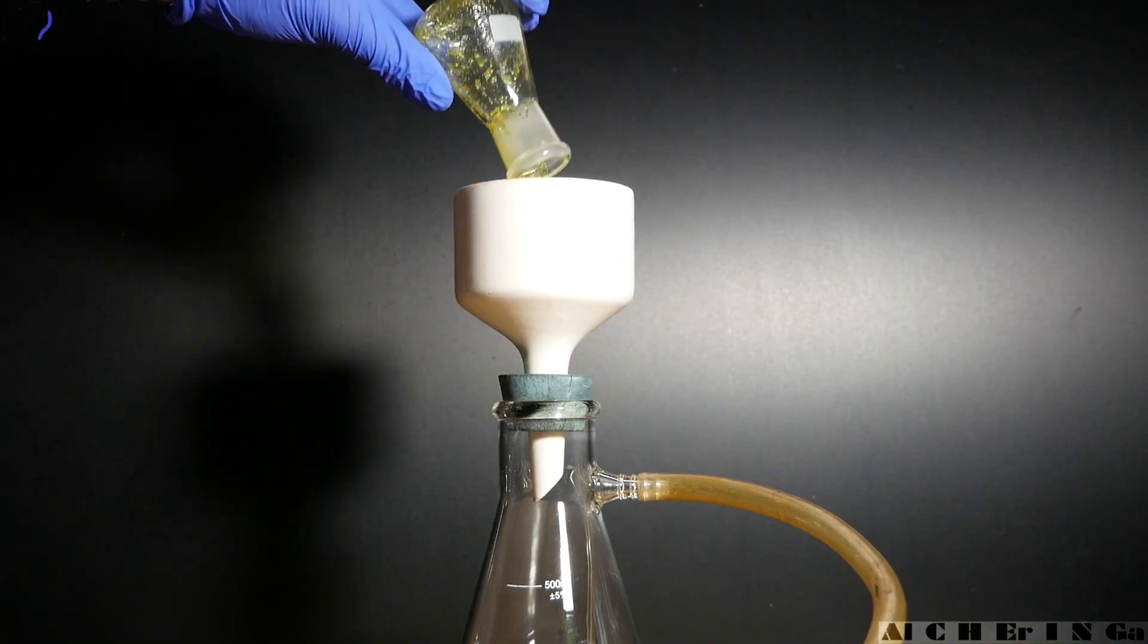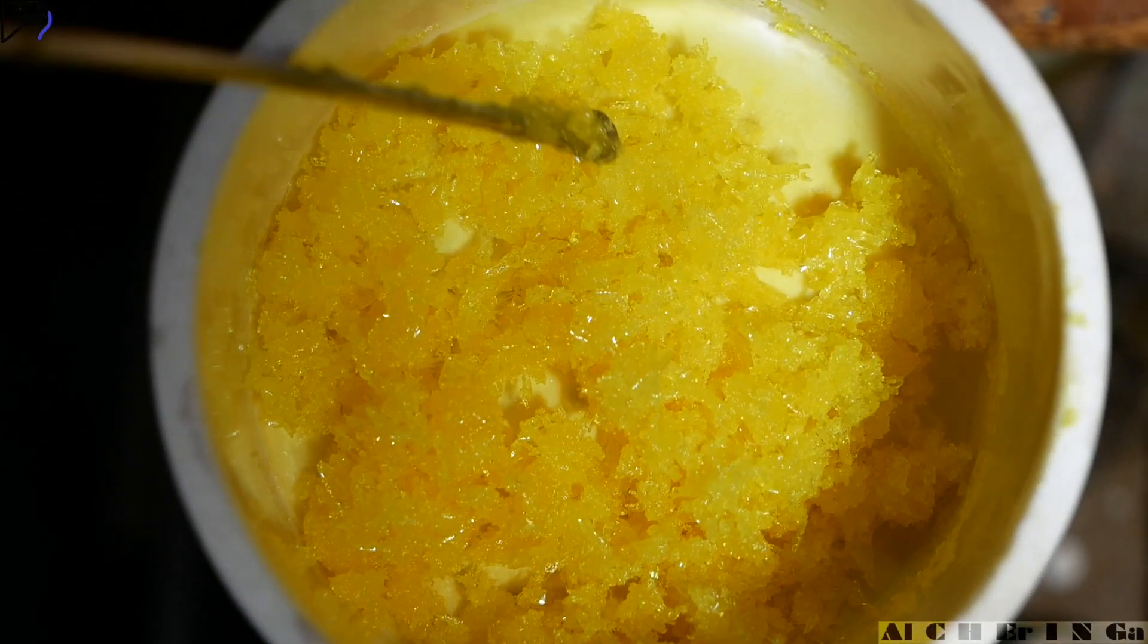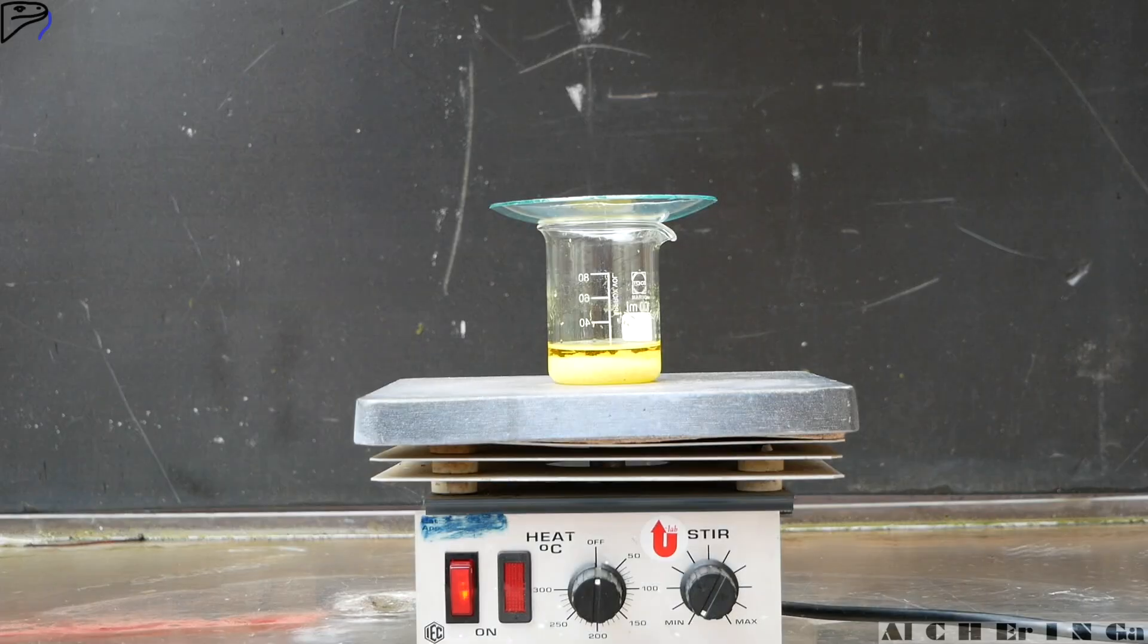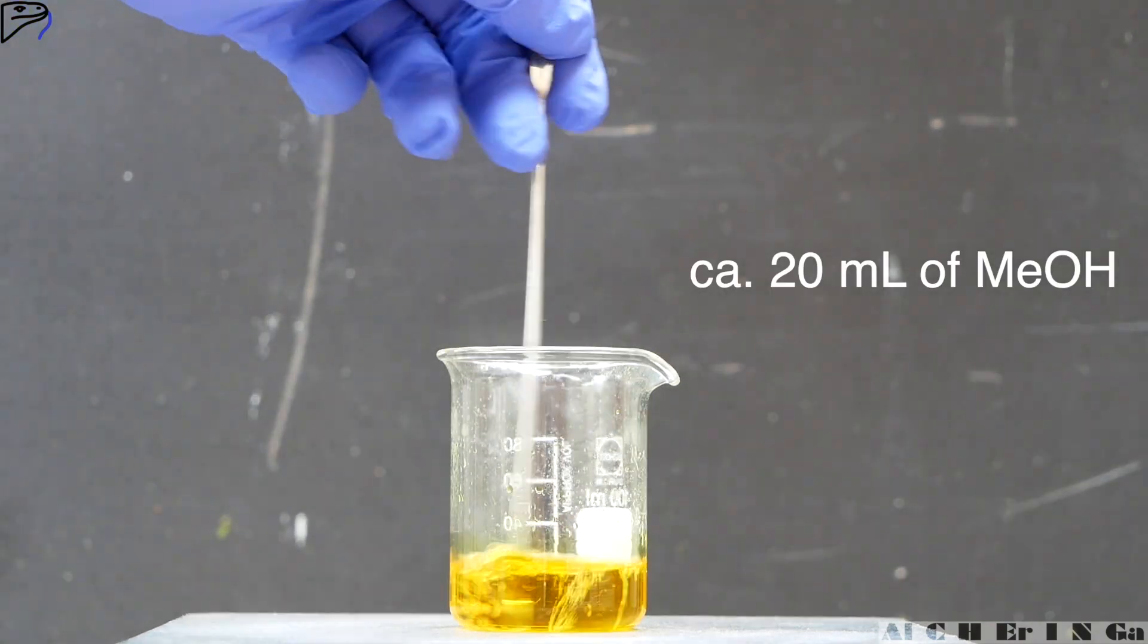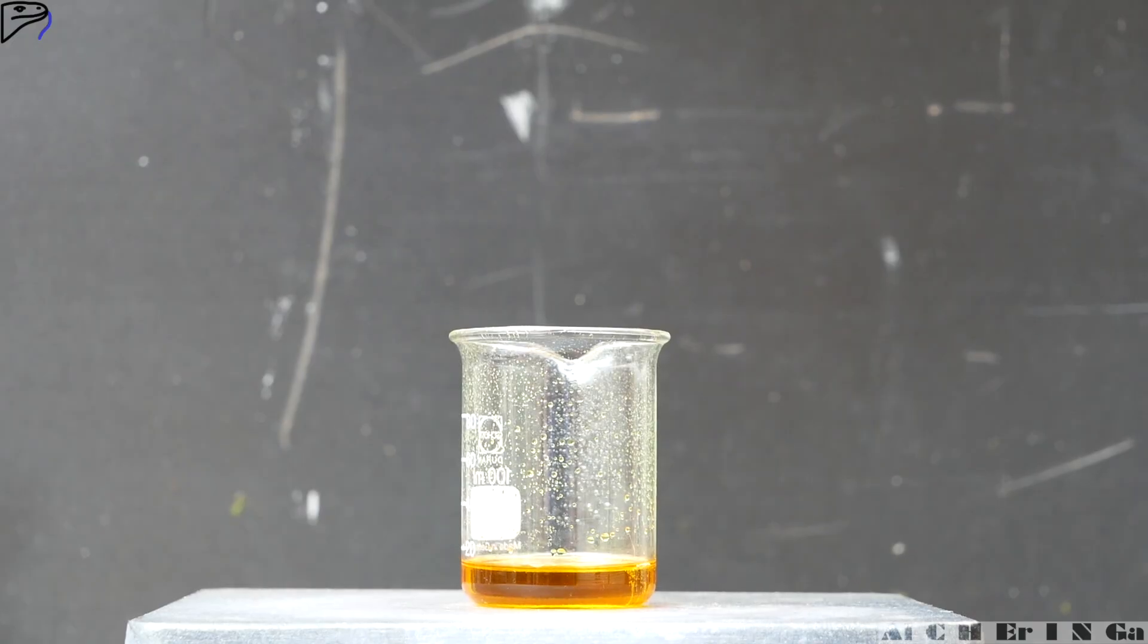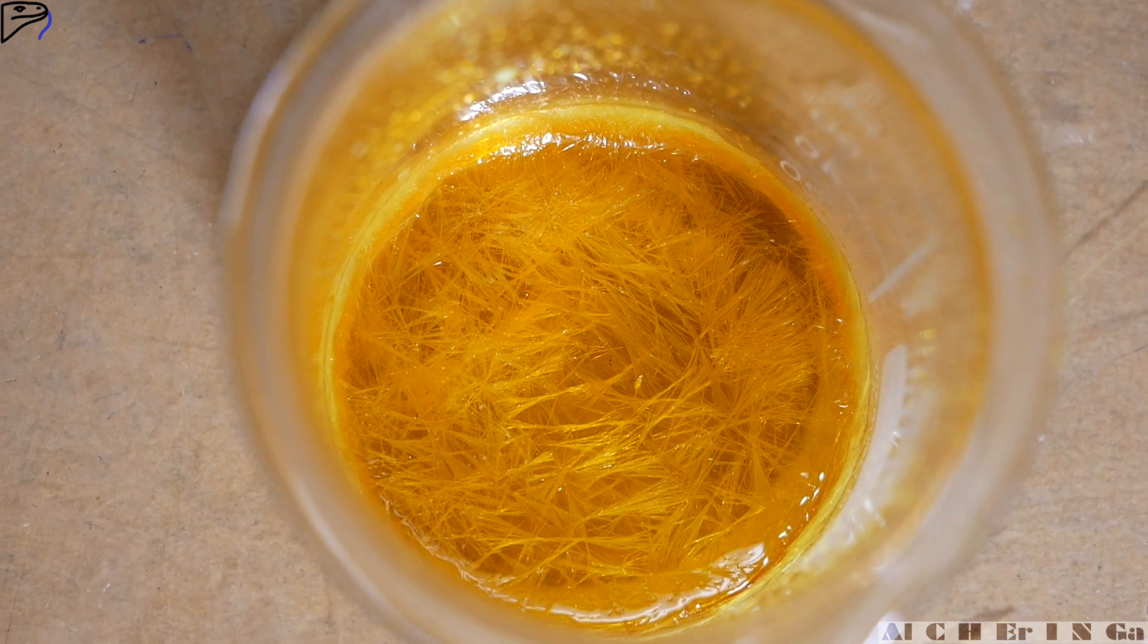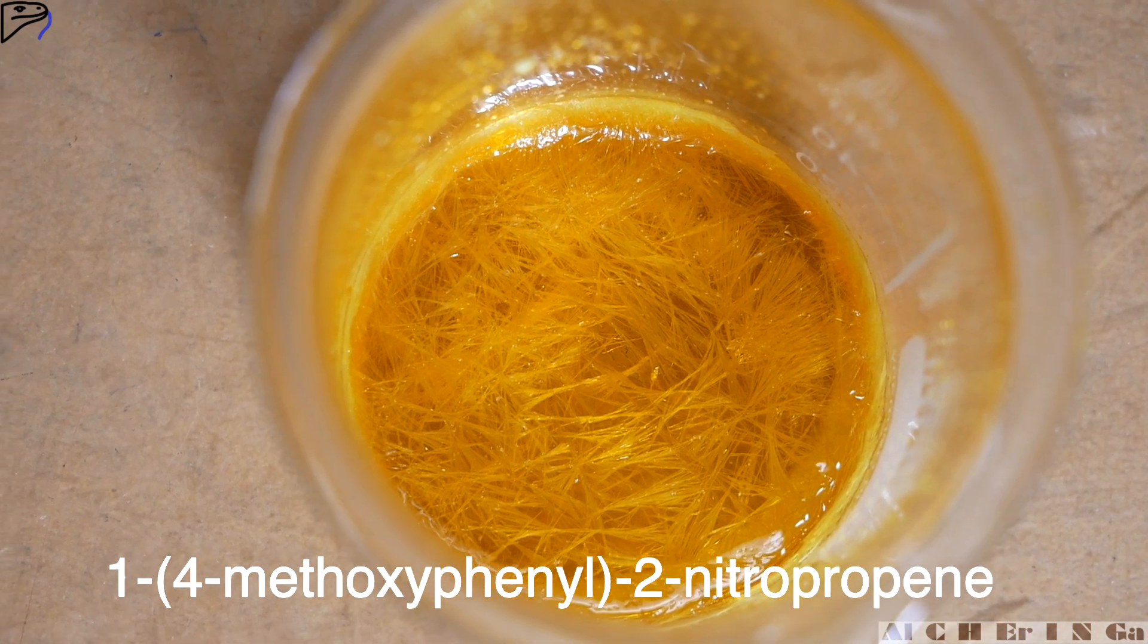Filter the crude nitropropene crystals under vacuum and continue to pull vacuum for a few minutes to thoroughly dry the crystals. The crude nitropropene was recrystallized from around 20 milliliters of boiling methanol. The hot liquid was quickly filtered and after it cooled down to room temperature, beautiful needle-like crystals were observed. This should be pure 1-4-methoxyphenyl-2-nitropropene.